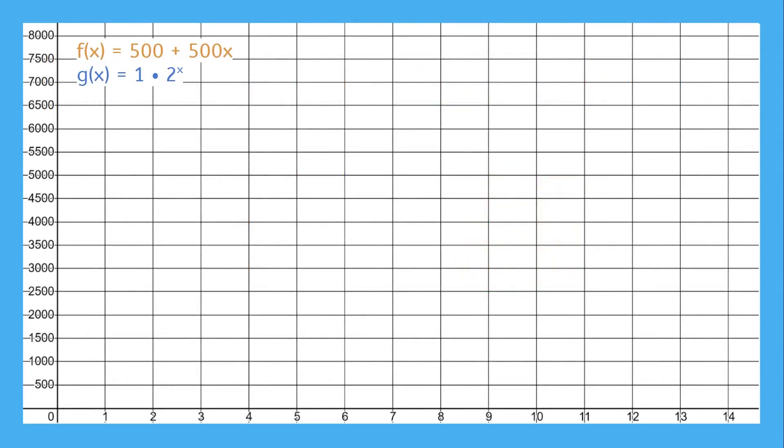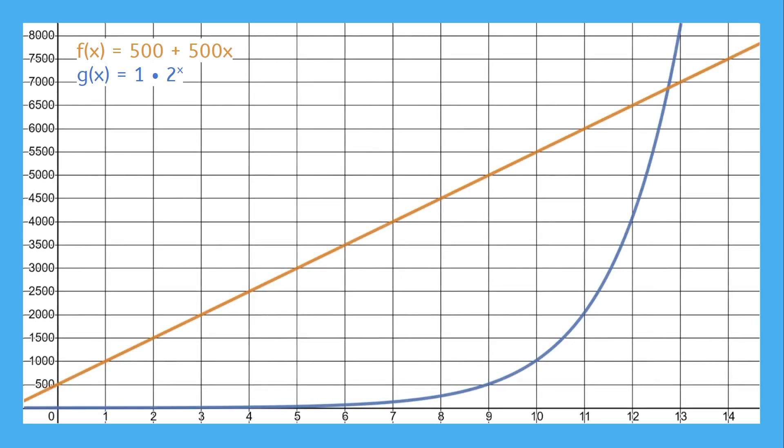Let's compare the two functions over time by graphing them. In the beginning, the first option started at $500 and the second option started at $1. The next day, the first option adds $500 more, while the second option only goes up to $2. This gap is just getting wider. There is no way the second option was better.